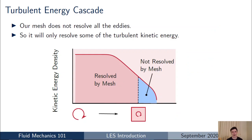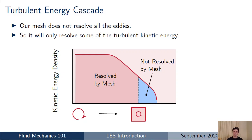In large eddy simulation we're not resolving all the eddies — only some of them, because at a certain point the grid size is too large to resolve smaller eddies within a single cell. In terms of the energy cascade, at some point along the x-axis we have the smallest eddy our mesh can resolve. Everything to the left is resolved by the mesh, capturing a large proportion of the turbulent kinetic energy. The energy to the right of that point is not resolved and must be accounted for by the subgrid scale model.